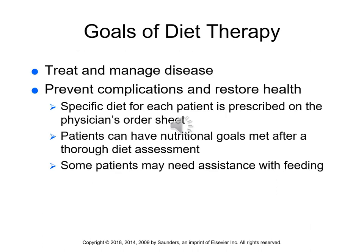The goal of diet therapy is either to treat and manage the disease, or to prevent complications and restore the patient's health. Every patient should have a specific diet order, so you want to make sure you review the physician's order sheet to determine what that person's diet is and ensure they are receiving the appropriate diet. Patients can have nutritional goals met after a thorough diet assessment has been completed.